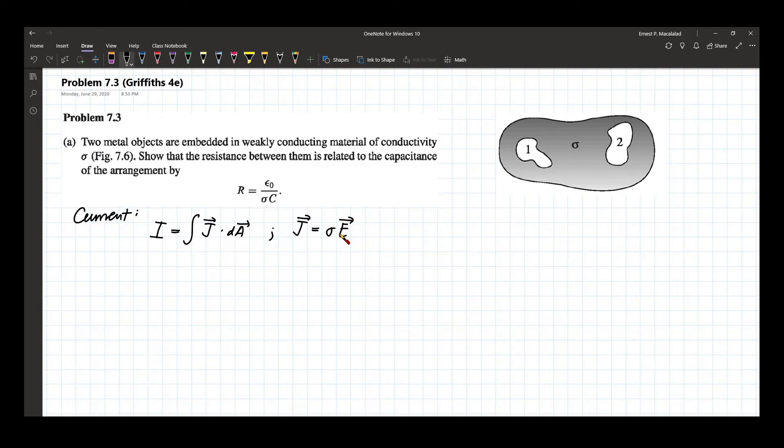We know that J is equal to sigma E. So therefore, by substitution, current will now be equal to the integral of sigma E dot dA.